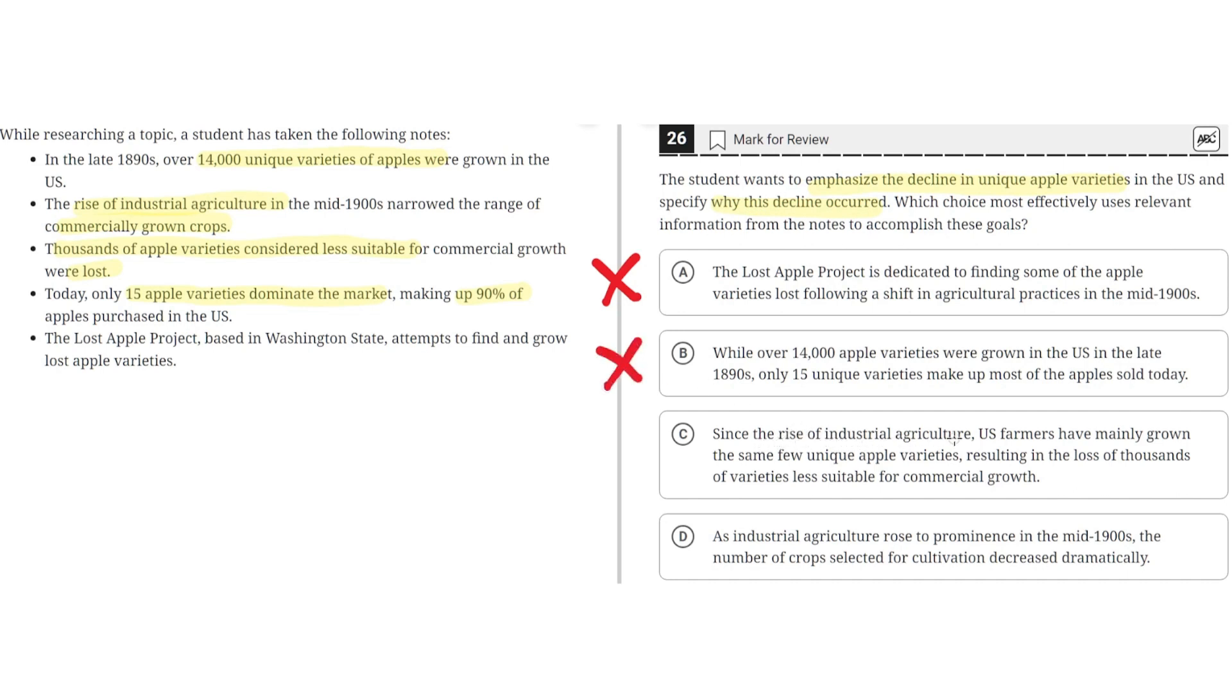C: Since the rise of industrial agriculture, U.S. farmers have mainly grown the same few unique apple varieties, resulting in the loss of thousands of varieties less suitable for commercial growth. This seems to be correct because it emphasizes the decline in unique apple varieties by saying that there were thousands of varieties that were lost because they were less suitable for commercial growth.